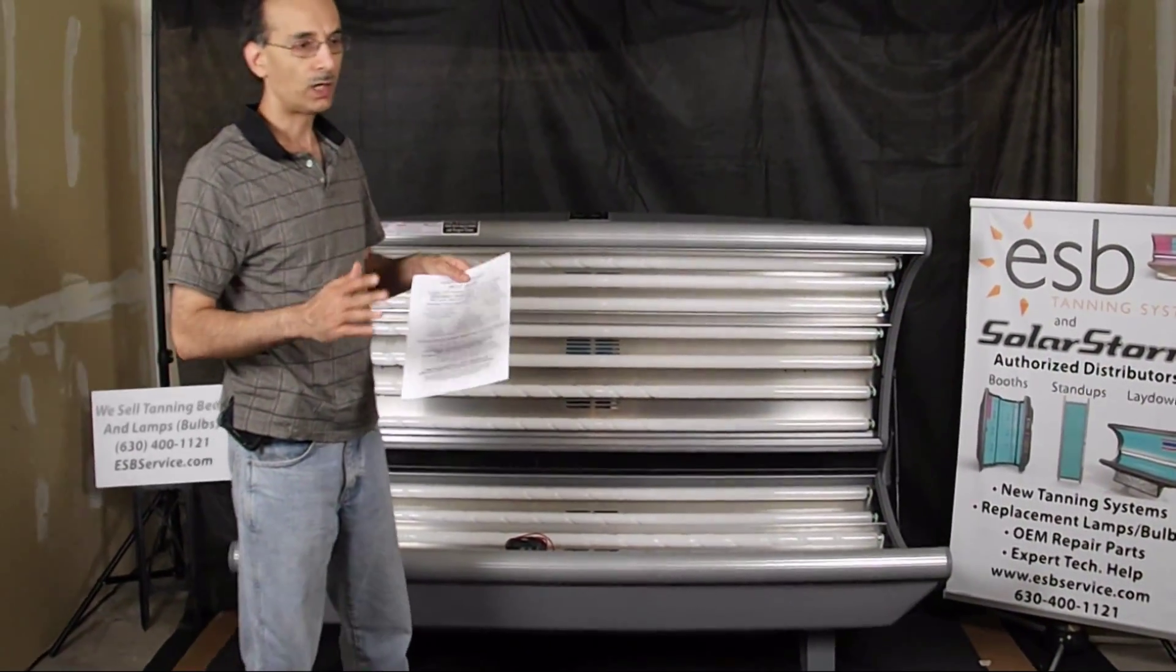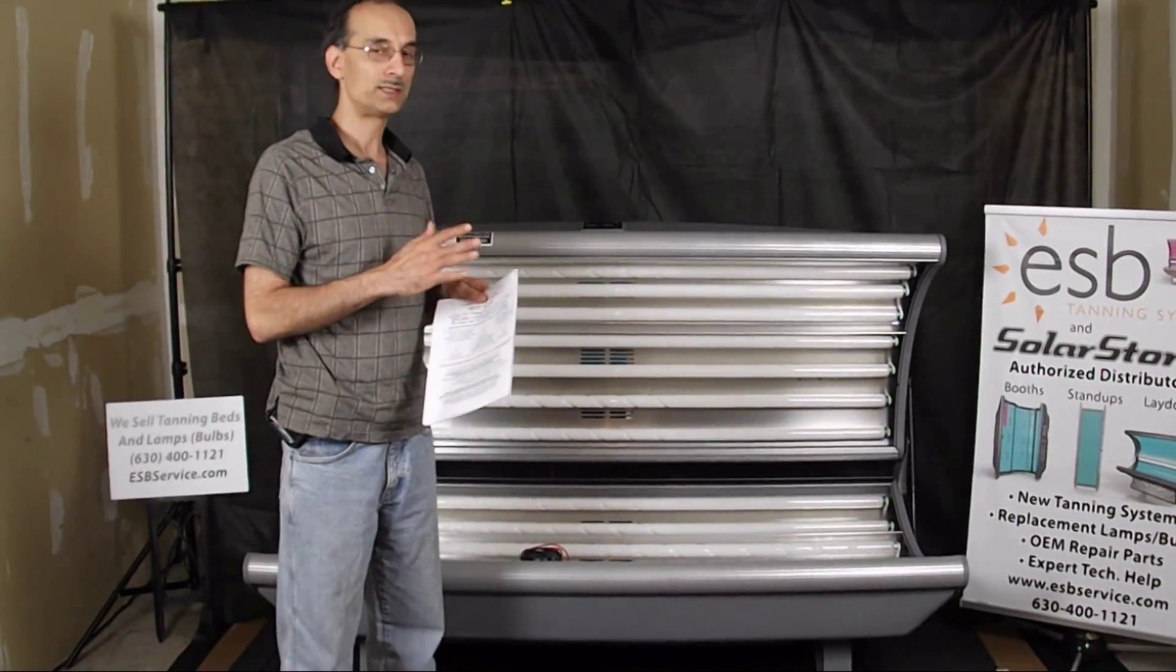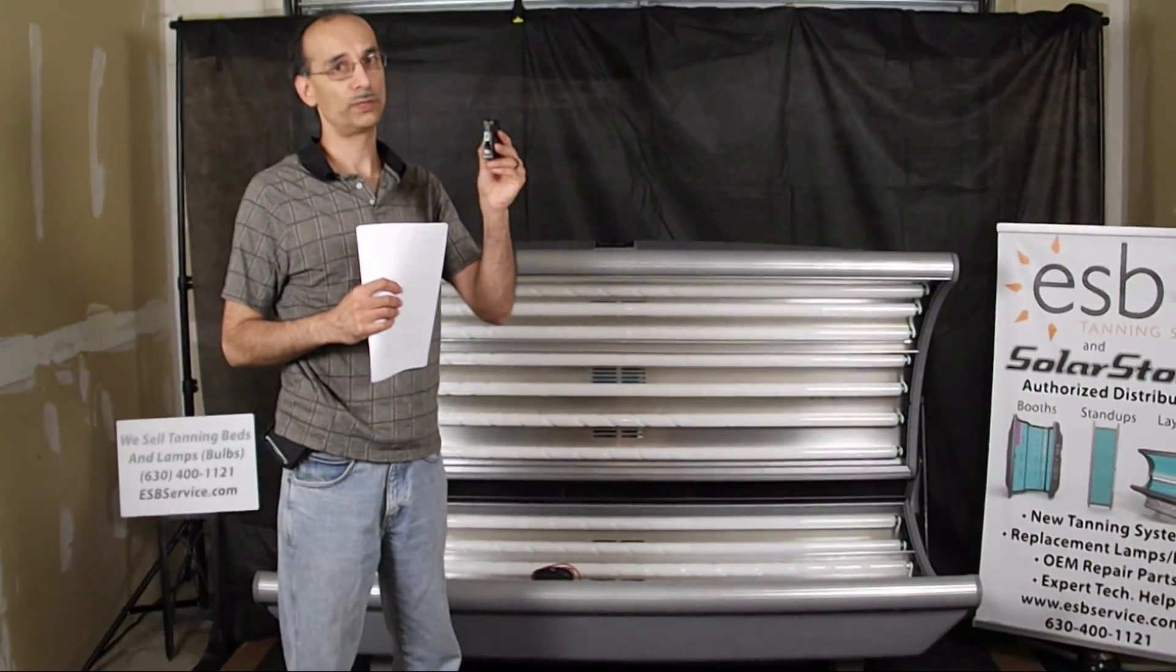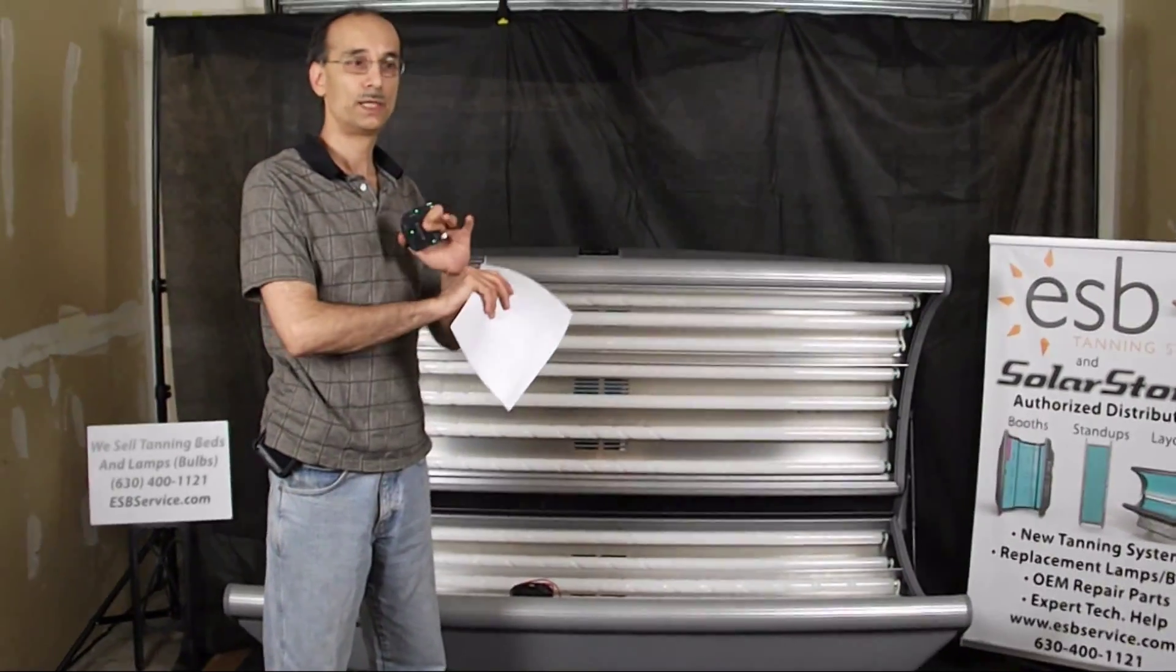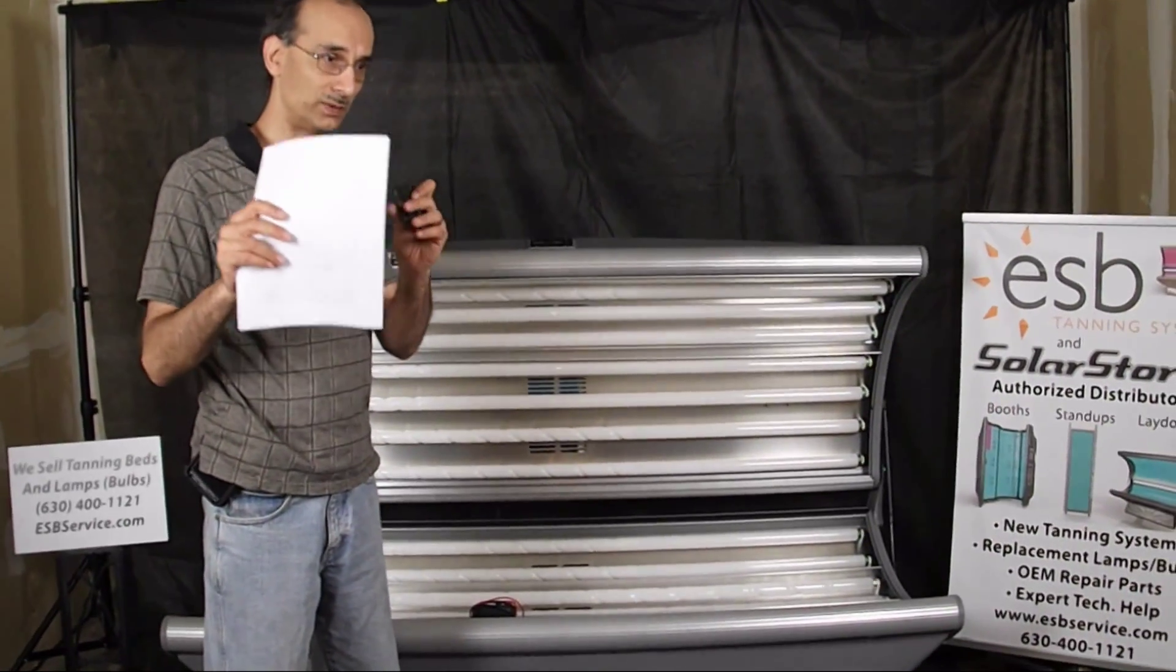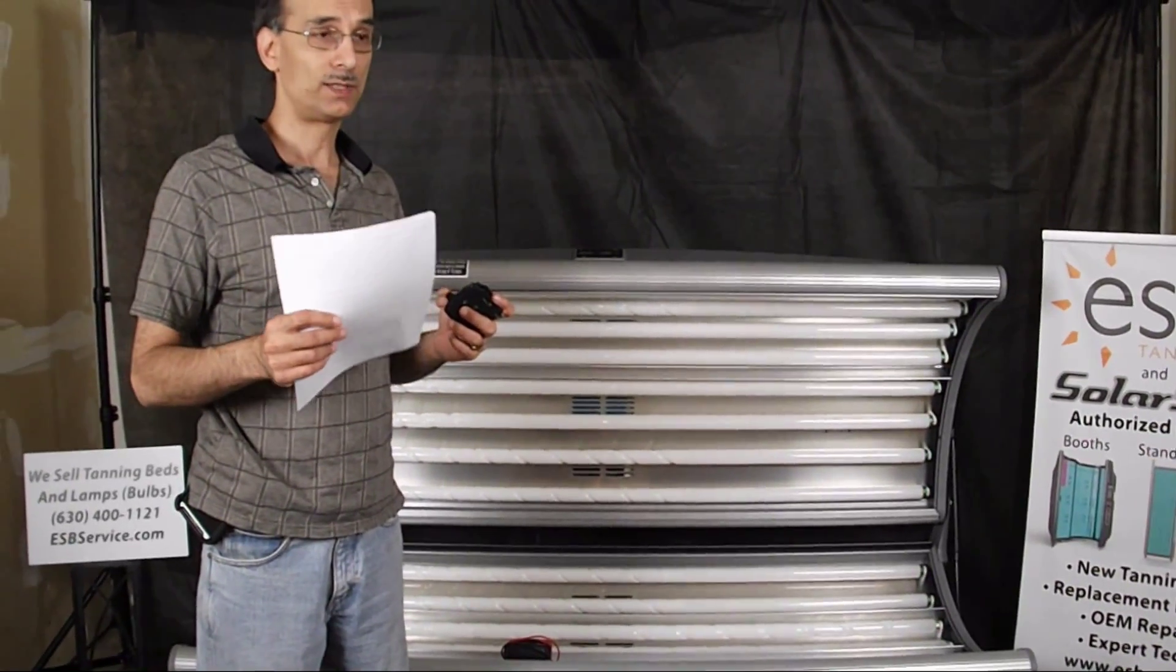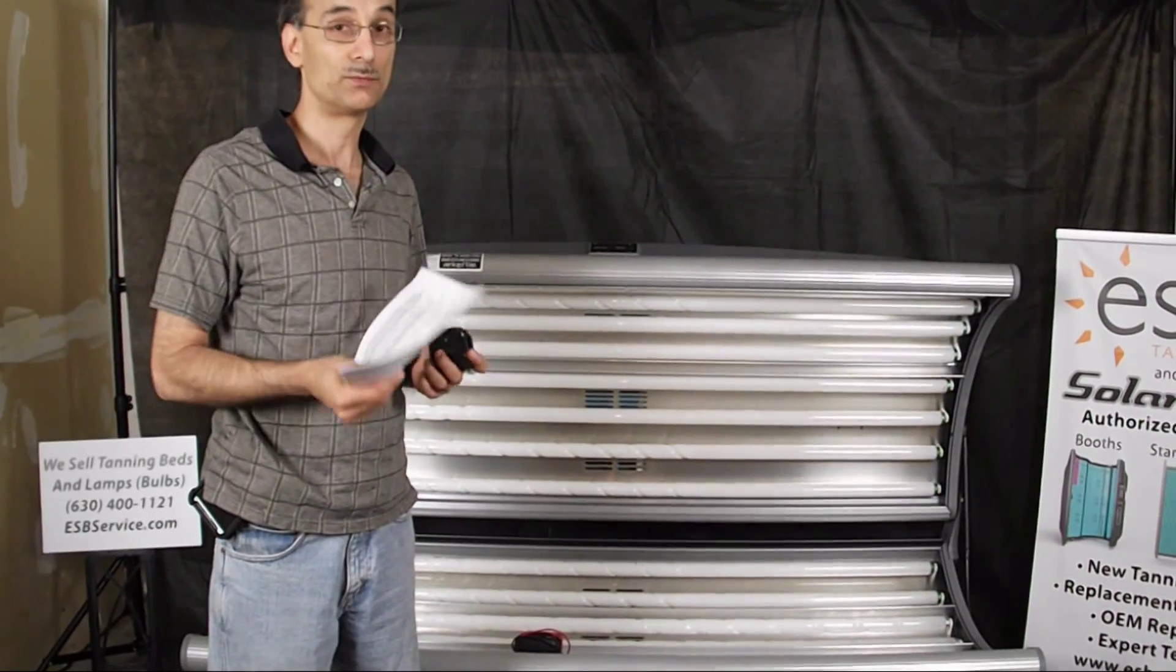Now, regardless of the model of tanning bed you have, they all need to be on a dedicated circuit breaker. That means that in your breaker box, there's one circuit breaker that goes to the receptacle that the bed is plugged into and nowhere else, no other branches or splits. It's simply dedicated to that outlet and it would also need to have the amperage capacity that's rated for the bed.